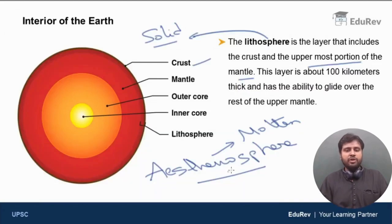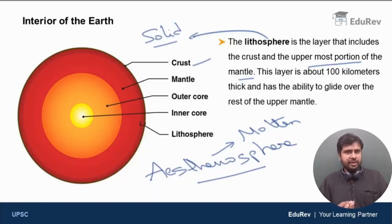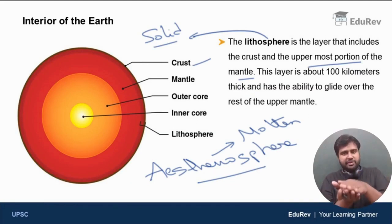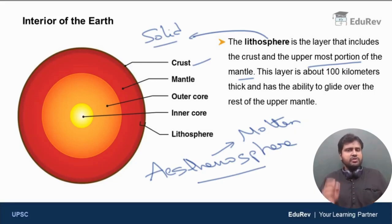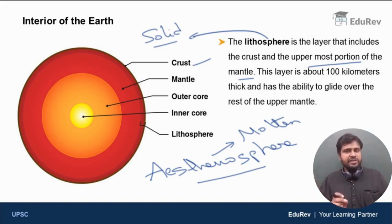The tectonic plates are moving over asthenosphere which is molten or semi-solid. You have the tectonic plates, and beneath them you have asthenosphere which is molten or semi-solid — so on top of asthenosphere, the tectonic plates are in constant motion. Why tectonic plates move, that reason we will discuss in detail under geomorphology, as it is not relevant right now.